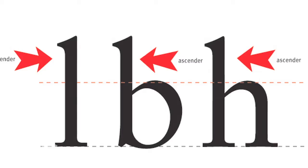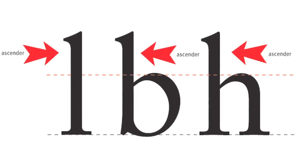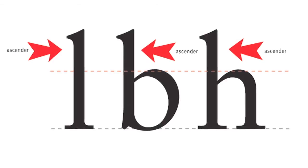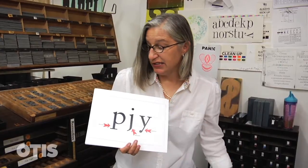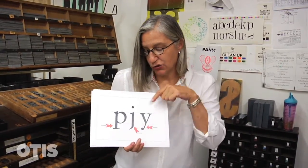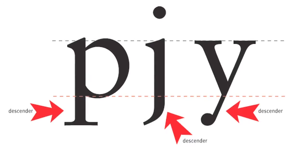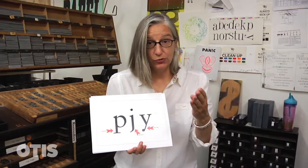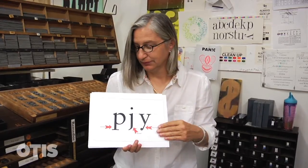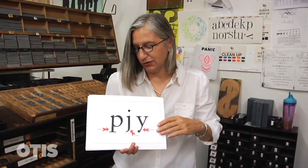Ascenders are parts of the letter form that go above the X height line. Not the whole letter form — just the part that extends is called an ascender. And the descender is the part of the letter form that drops below the baseline. So P's, J's, Y's, Q's have descenders. Ascender up, descender down.